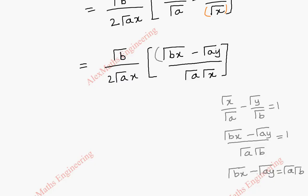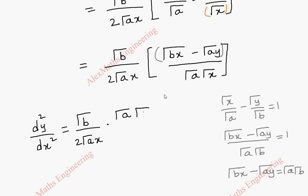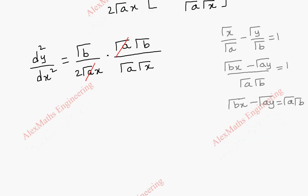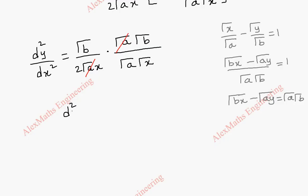Substituting back, d²y/dx² equals root b by 2 root a x, and the numerator is root a root b with denominator root a root x. We can cancel root a and root a. Multiplying the remaining terms gives the second derivative equal to b by 2x root x into root a, so we have x root x and root a in the denominator.